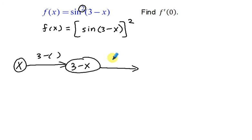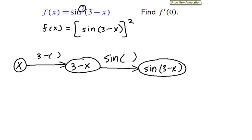So we're going into the sine function and that produces the sine of 3 minus x. And finally, we're going to take that input into the squaring function and that completes our chain. So that goes into the squaring function and we get all of that stuff squared.